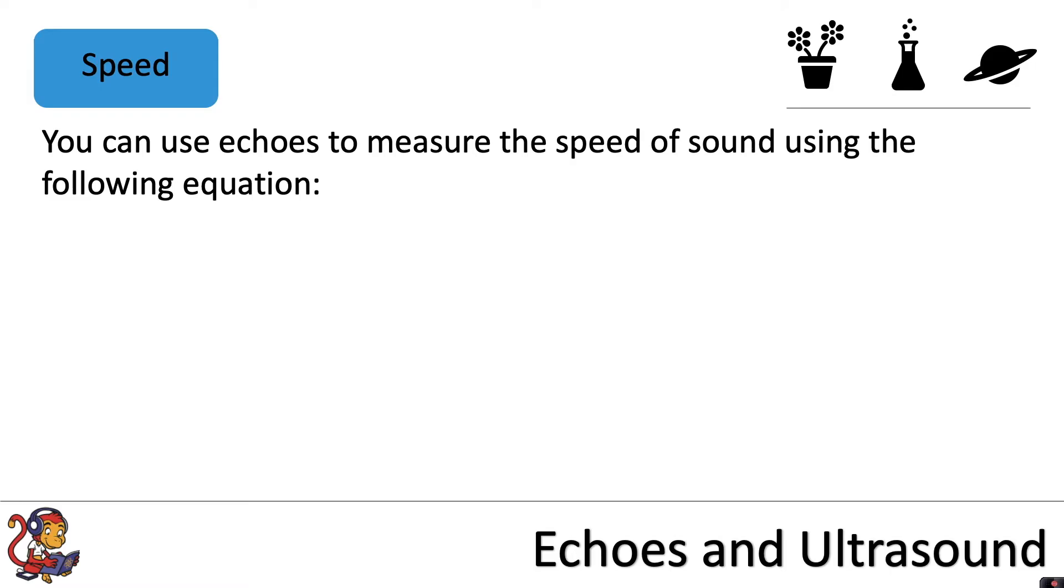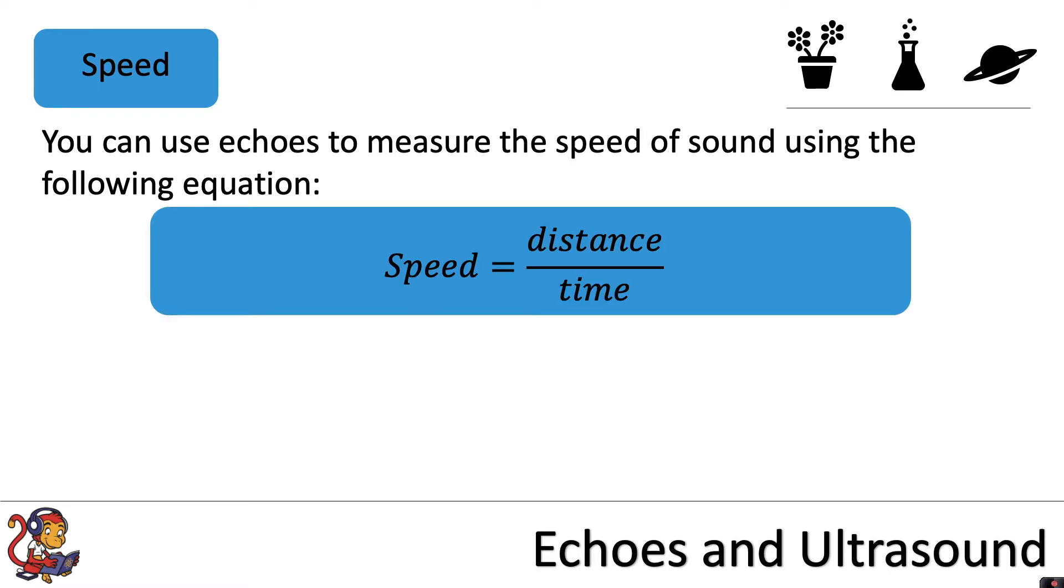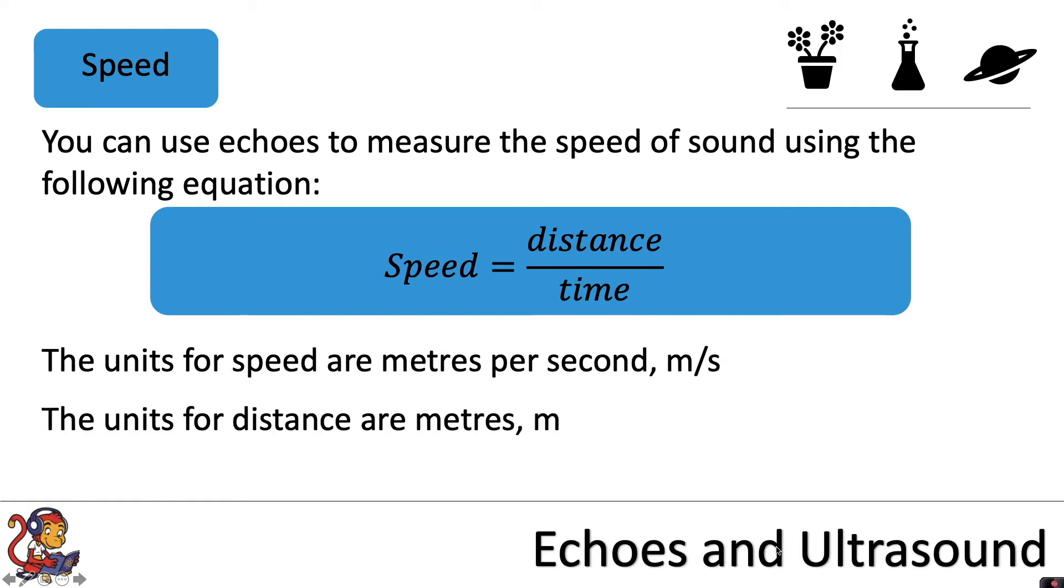You can use echoes to measure the speed of sound using the following equation. Speed equals distance divided by time, where the units for speed are meters per second, the units for distance are meters, and the units for time are seconds.